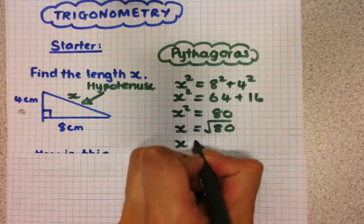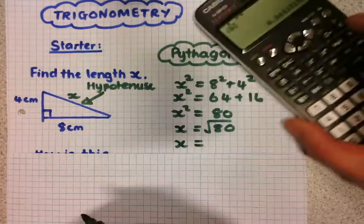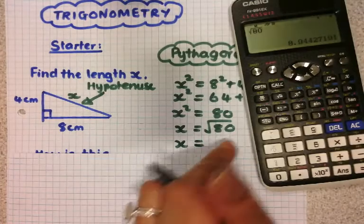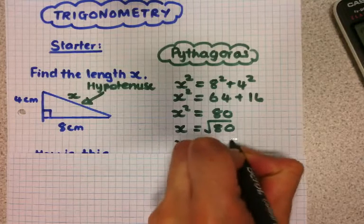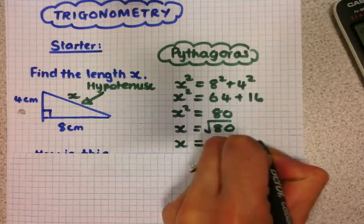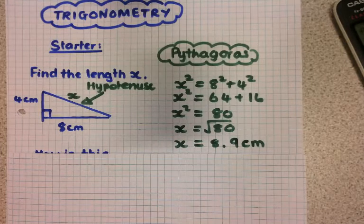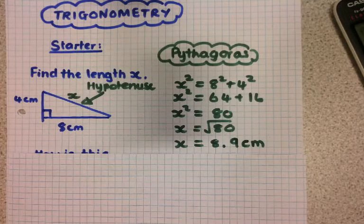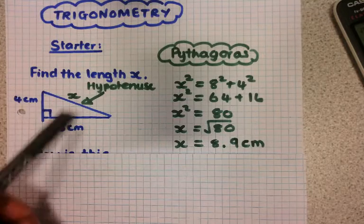And then to one decimal place, my answer is 8.9 centimeters because it's a length. So for Pythagoras, it's only to do with lengths. I've got two lengths here and I'm looking for the third side.